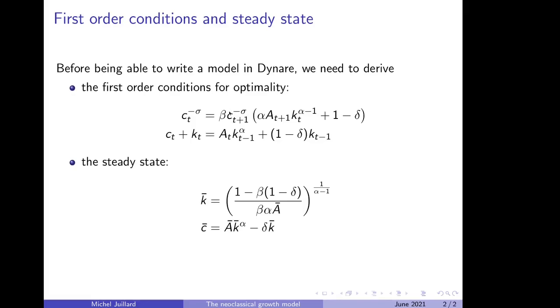Now that we see the first order condition for optimality, we can easily derive by hand—it is possible here, it's not always possible—the steady state.